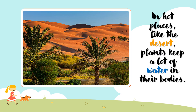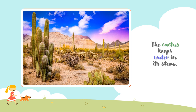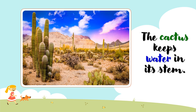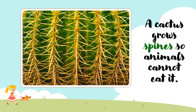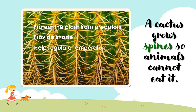In hot places like the desert, plants keep a lot of water in their bodies in order for them to survive. The cactus keeps water in its stem and is one example of plants that grow in the desert. A cactus grows spines so animals cannot eat it. Spines help the cactus to thrive in desert environments by providing multiple functions: they protect the plant from predators, provide shade, help regulate temperature, reduce water loss, and even help the plant to spread and reproduce.